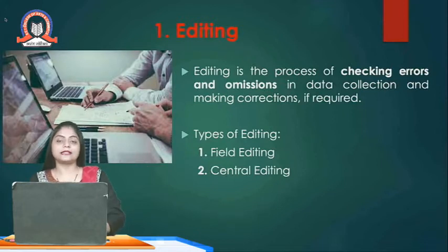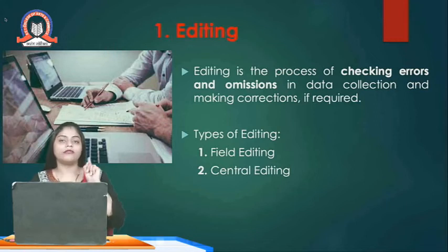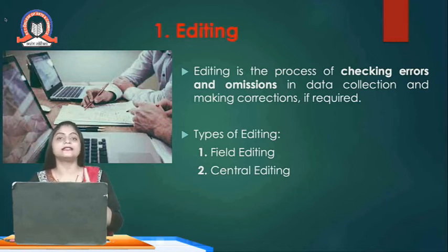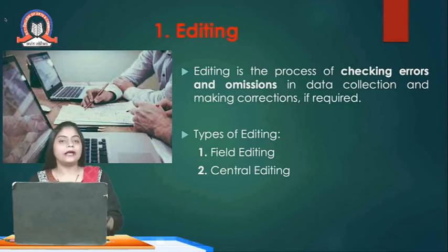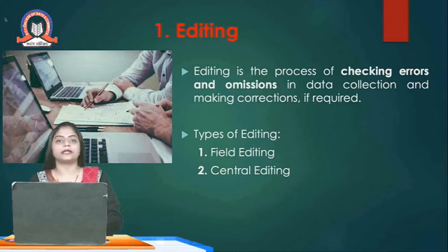As we discussed, there are five steps. Now let's look at each step one by one. The first step or the first stage in data processing is editing. Editing is nothing but it is a process of checking the errors and omissions in the data collected.